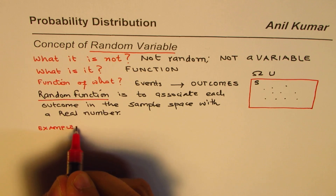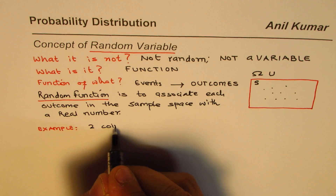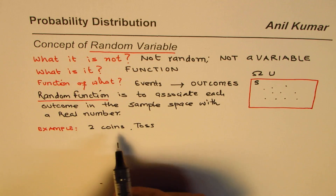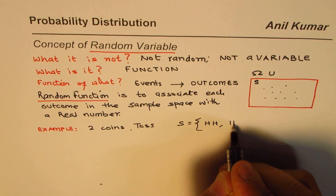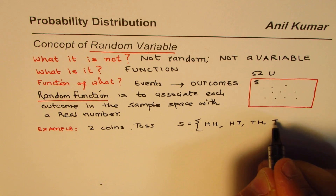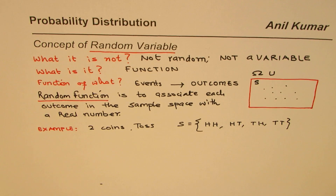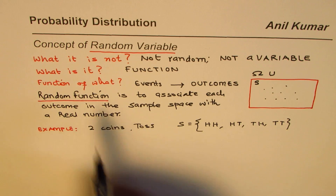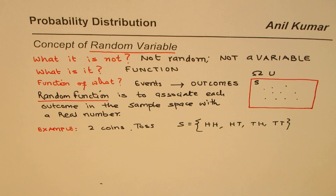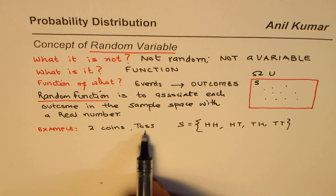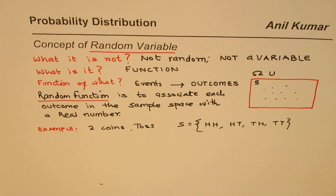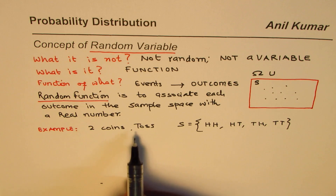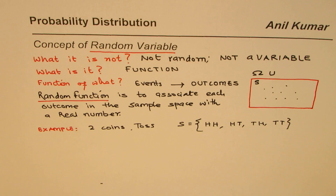Let's take the tossing of two coins. The possible outcomes could be: two heads, head-tail, tail-head, or two tails — four discrete outcomes. We are considering two fair coins. Now how do we define a random variable or function in this case?